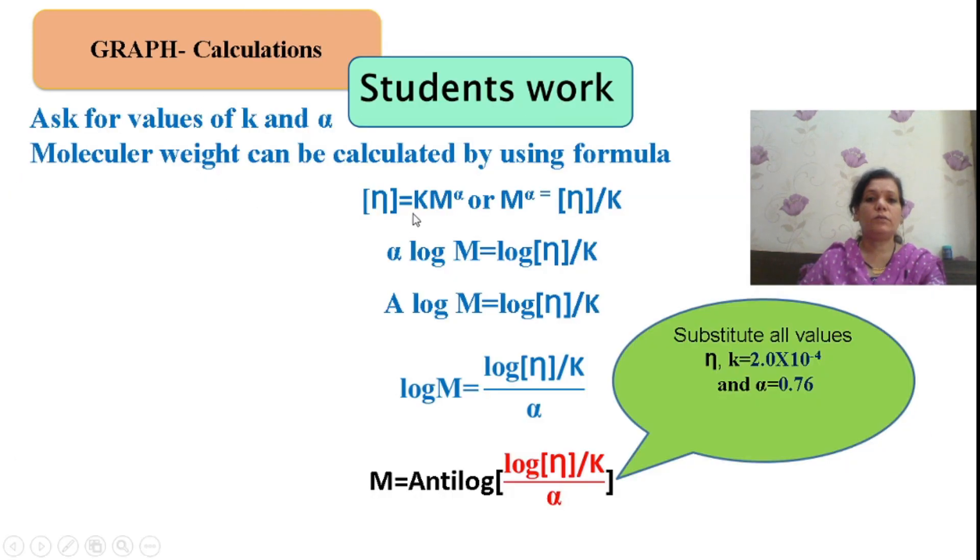When I am doing the calculation using this particular formula, I need to ask for K and alpha value for the given polymer. Considering the given polymer is polyvinyl alcohol, I will provide you the value of K and alpha. You just substitute all the values and find out the molecular weight of the given polymer.